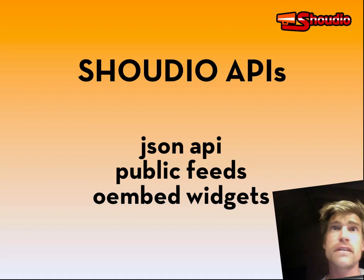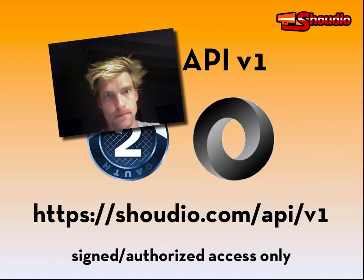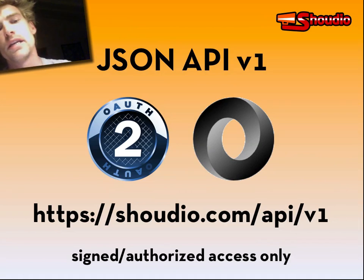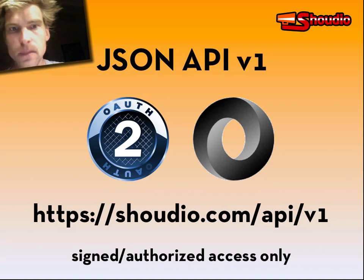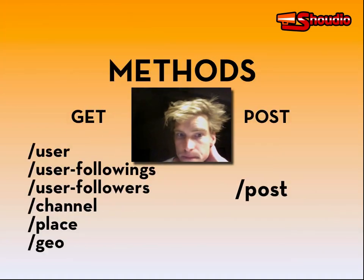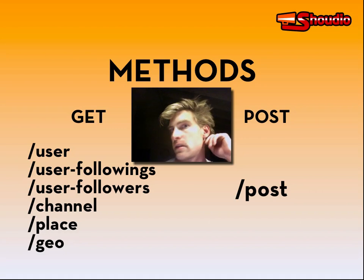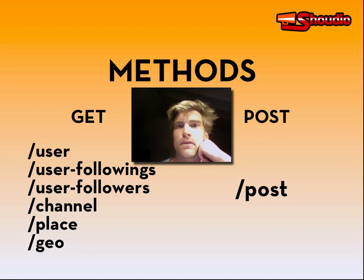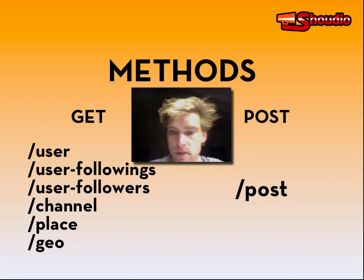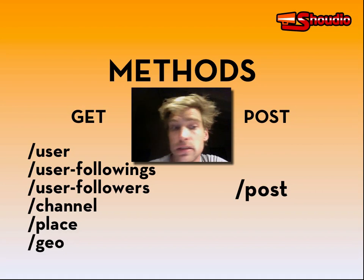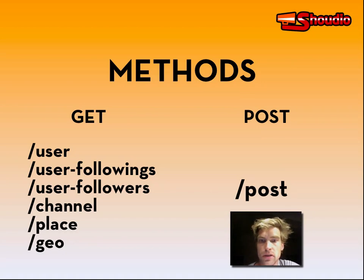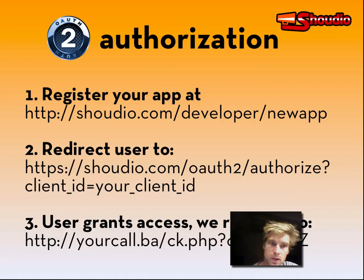We have a few APIs: the JSON API, public feeds, and some oEmbed widgets. The JSON API is a REST-ish interface, similar to the Facebook API or the SoundCloud API. Our methods expose data such as user stream information, followers, the people a given user follows, channel info, recordings at a Foursquare place, nearby recordings via the geo method, and of course you can post new audio recordings to the Xaudio platform via the post method.